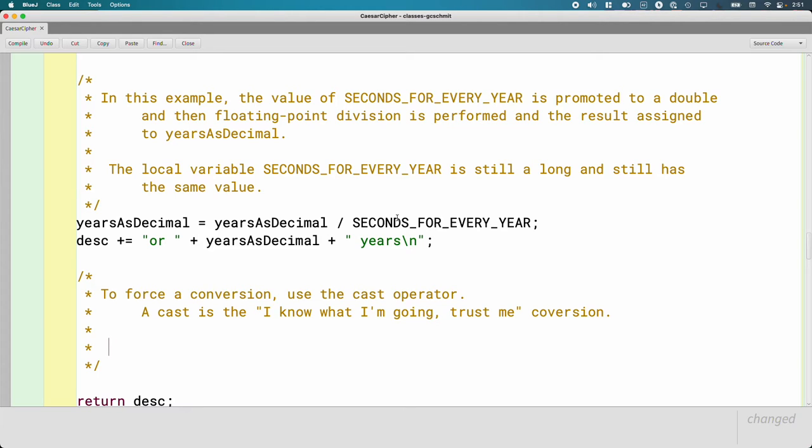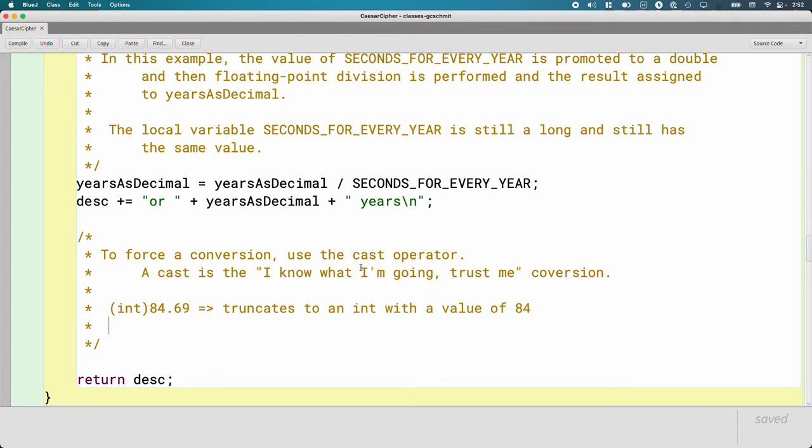So Java won't automatically do a narrowing conversion, and there's other types of conversions Java won't automatically do as well. When we use the cast operator, we're telling Java, look, I know what I'm doing, trust me, I understand the consequences, just do it. Okay, the syntax for a cast is really kind of weird. This is what it looks like. The cast operator is a type inside of a pair of parentheses. That's the cast operator. So, for example, if I write int inside of the parentheses, and then 84.69, what that does, what that cast operator does, is it truncates to an int with a value of 84. When we use the cast operator to perform a narrowing conversion to an int, it always truncates. Always truncates.